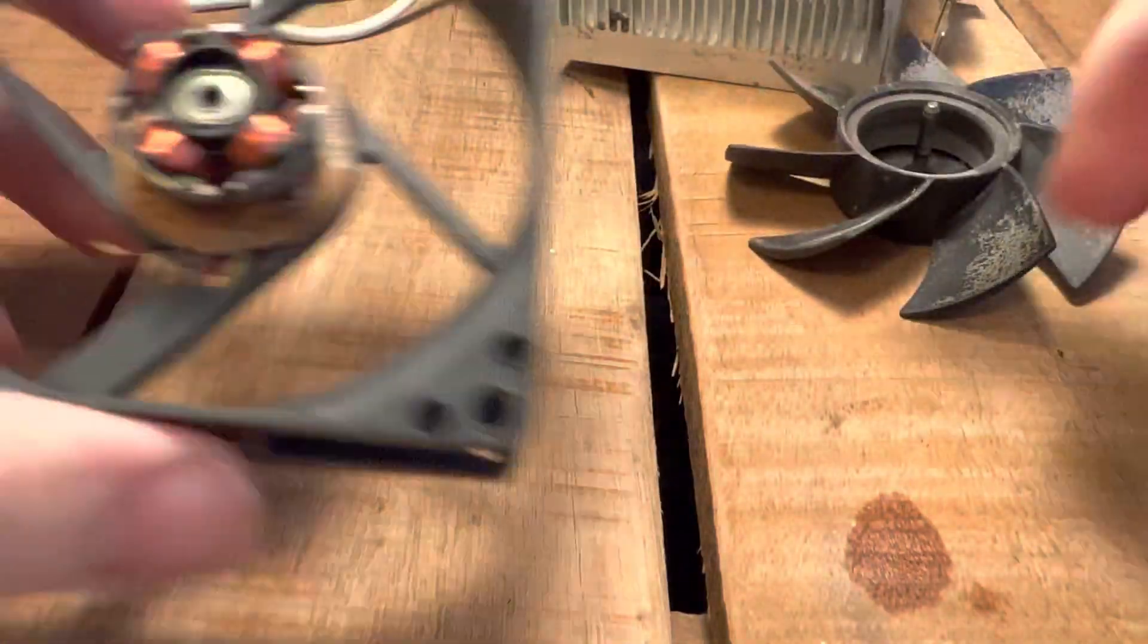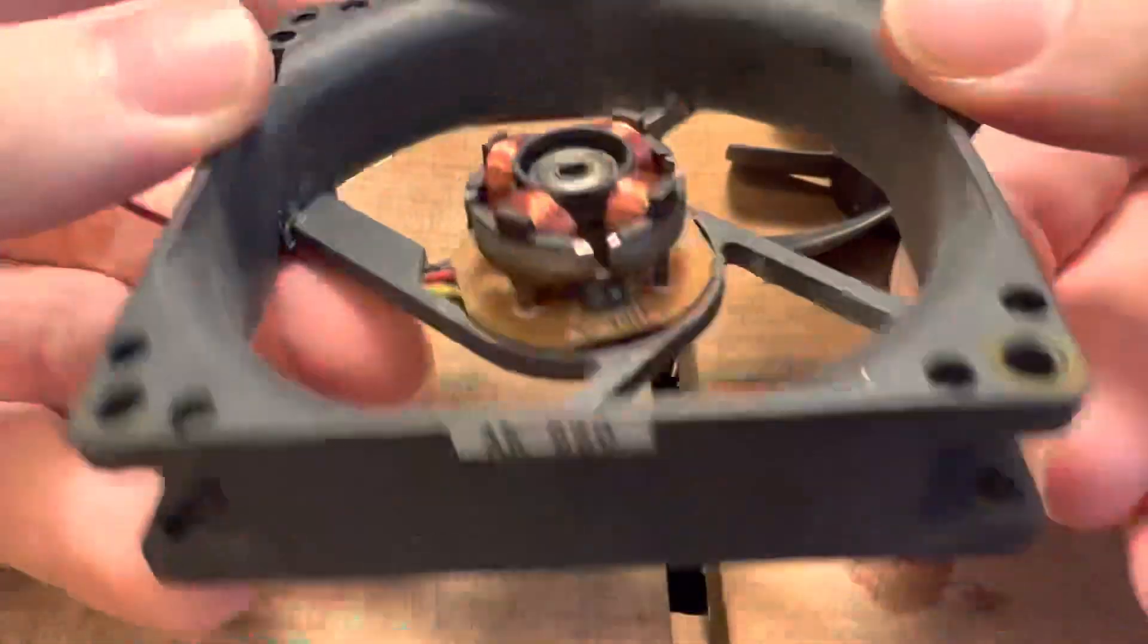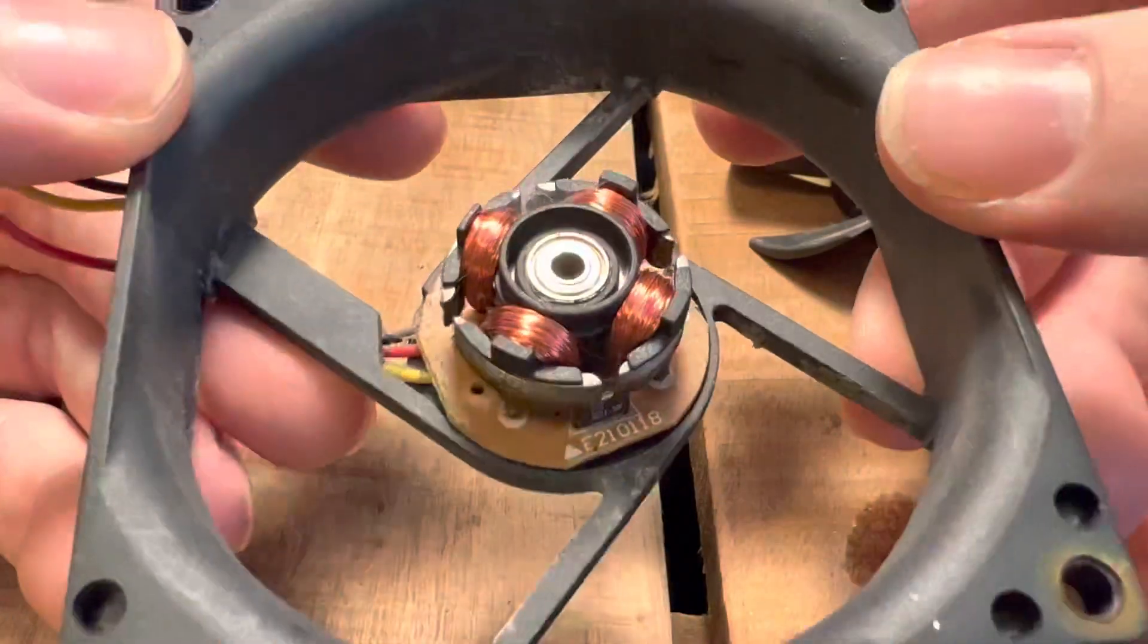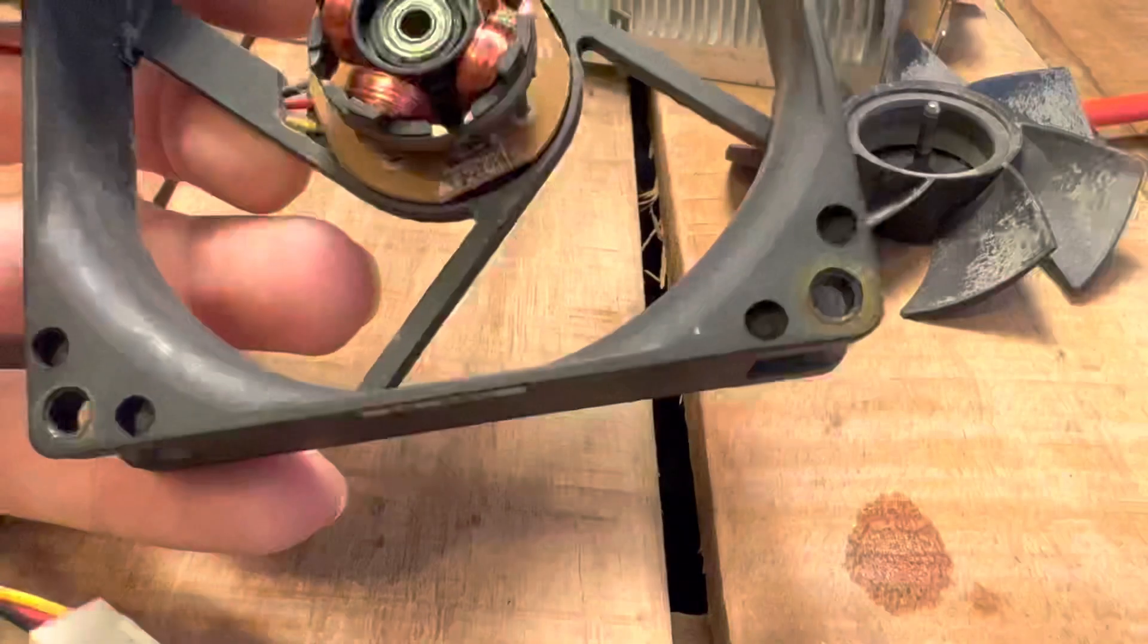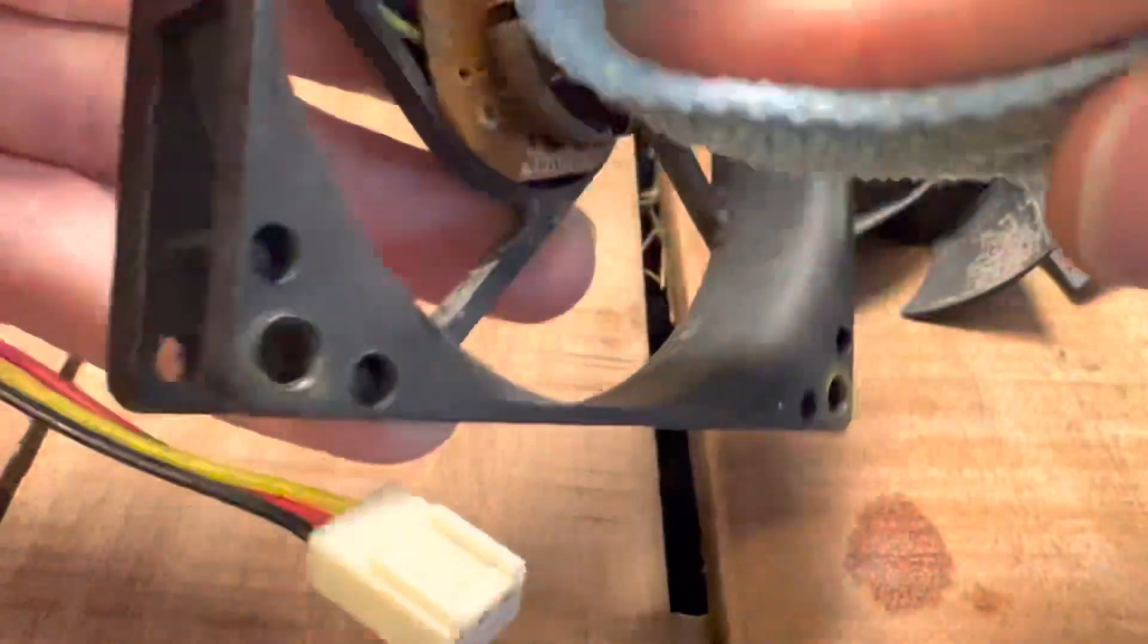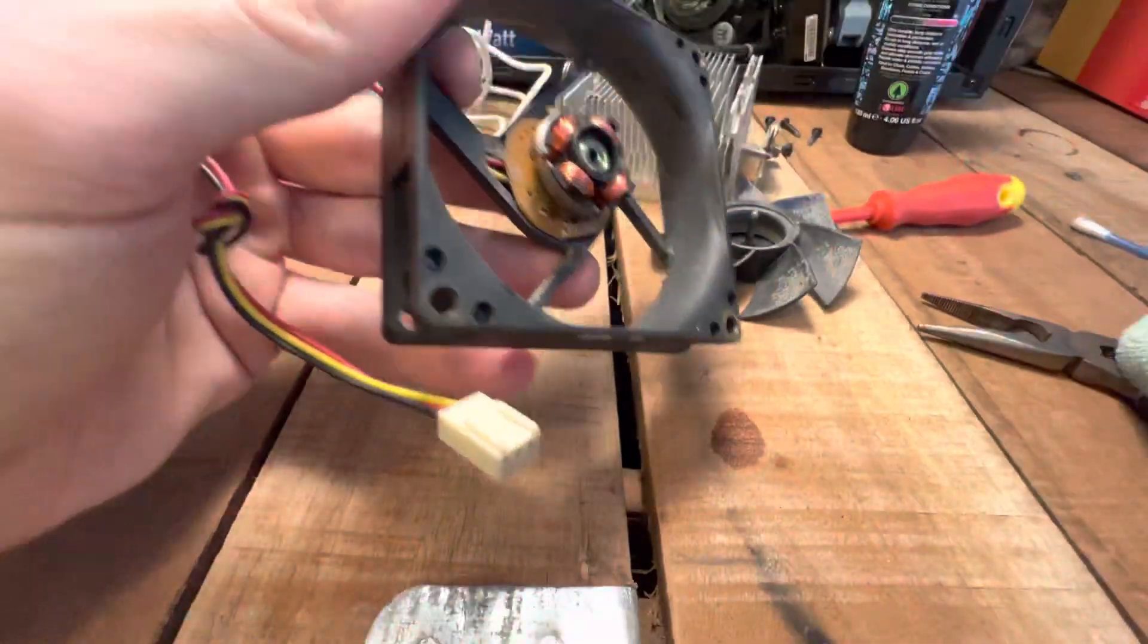That's the spindle thing, and this is a four-pole fan. You can see there the bearing is actually inside that hole.